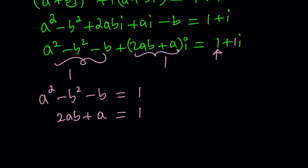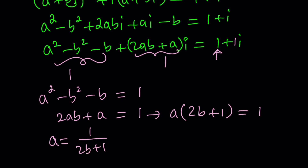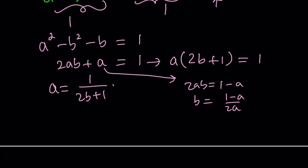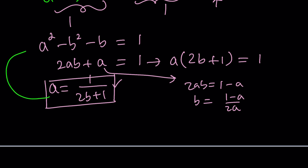Here's what I can do: from the second equation I can isolate a. Factor out an a and you get a times (2b plus 1) equals 1, so a becomes 1 over (2b plus 1). You could also isolate b — subtract a then divide by 2a — but I like isolating a better because it only has a variable in the denominator. This is what we'll substitute into the first equation.